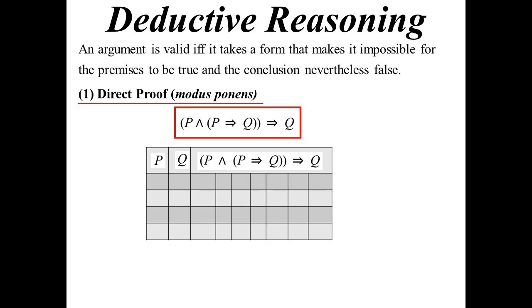I'm going to prove this is logically valid, because what I should be able to do is — it doesn't matter whether P or Q are true or false — when I substitute into the truth table, every single possibility should come out to be true. And if that's the case, this is a solid proof that will always work.